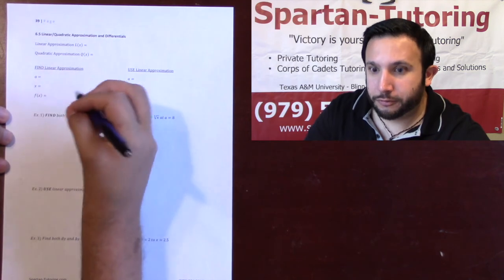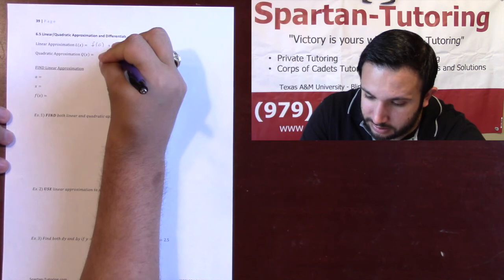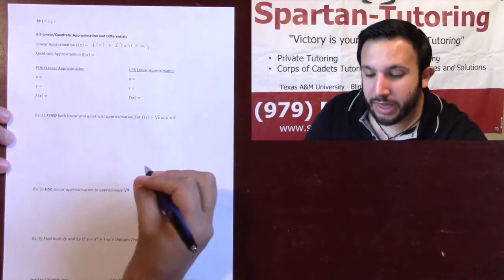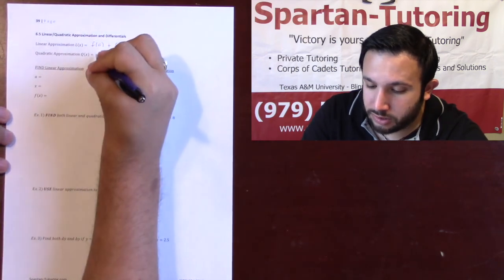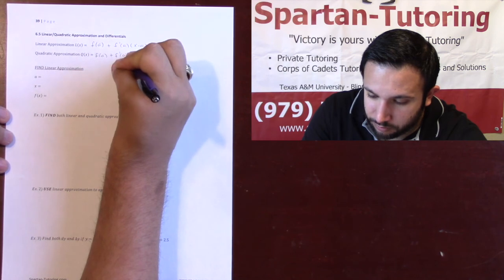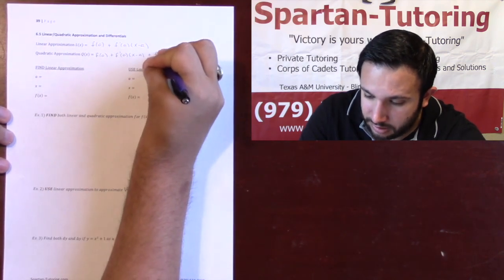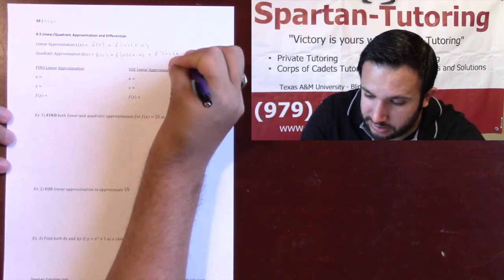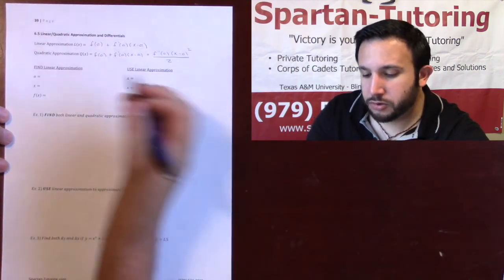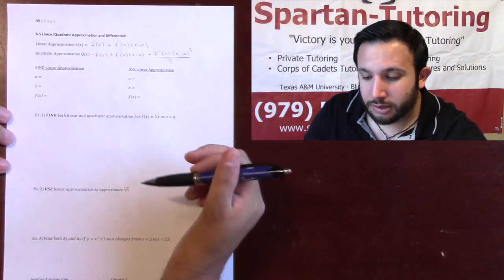The general formula for a linear approximation is f(a) plus f'(a) times (x minus a). As for your quadratic approximation, this is f(a) plus f'(a) times (x minus a) plus f''(a) times (x minus a) squared over two. Notice with the quadratic approximation you're just adding that third, quadratic term.